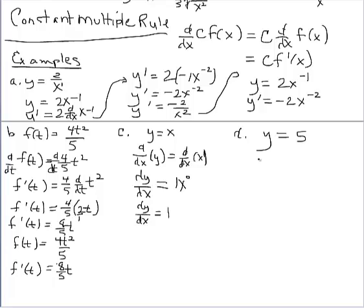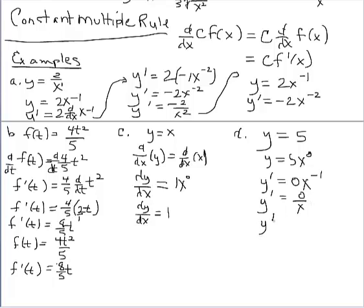Let's use the power rule on y equals 5. Getting it ready, consider 5 with the base of x to the 0 power. Applying the power rule: y prime equals 0 times 5 is 0, keep the base of x, reduce the exponent by 1 to negative 1. This is just 0 over x, and we know the answer is 0. So we can use the power rule on constant functions and get 0, and on linear functions and get the correct answer as well.